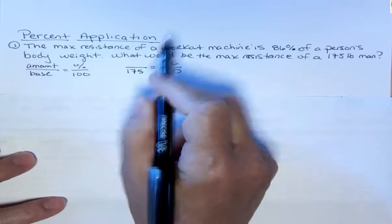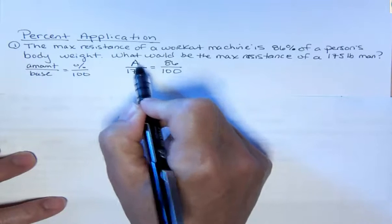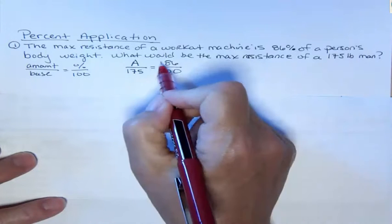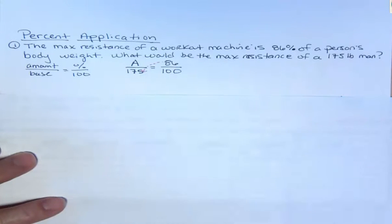And we want to know the amount. We want to know how much resistance could we get if we had a 175 pound person, knowing that the max you can get is 86% of their body weight. To solve that, I would cross multiply. That's going to be 86 times 175. I don't know what that is.